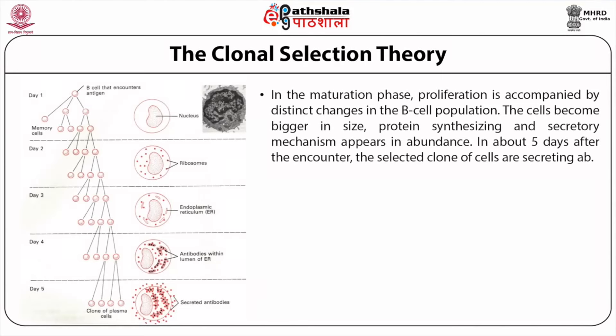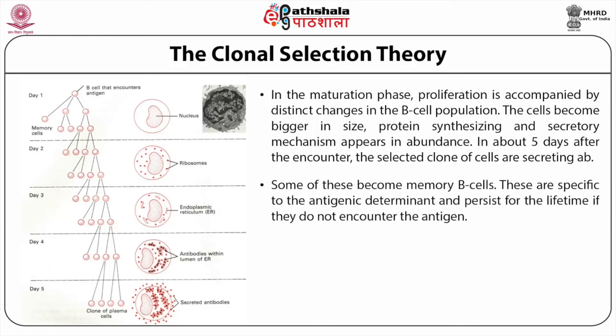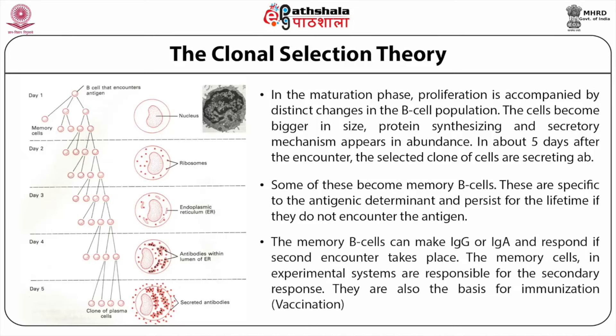In the maturation phase, proliferation is accompanied by distinct changes in the B cell population — the cells become bigger in size, and protein-synthesizing and secretory mechanisms appear in abundance. In about 5 days after the encounter, the selected clone of cells is found to be secreting antibodies. Some of these become memory B cells, which are also specific to the antigenic determinant and persist for some time or the entire lifetime.